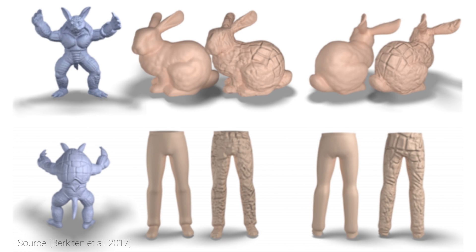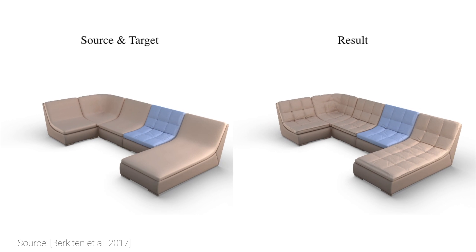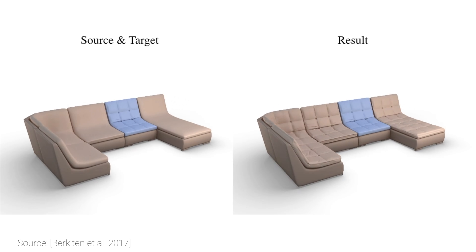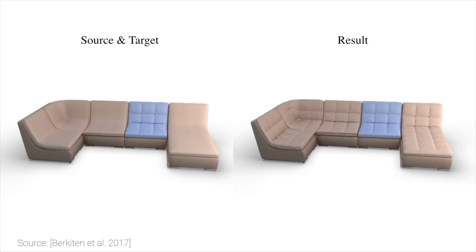Note that we cannot just perform this texture synthesis in 2D like we do for images, because as we project the result to a 3D model, it introduces severe distortions to the displacement patterns. It is a bit like putting a rubber blanket onto a complicated object — different regions of the blanket will be distorted differently. Make sure to have a look at the paper, where the authors present quite a few more results, and of course, the intricacies of this technique are also described in detail.